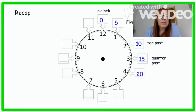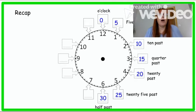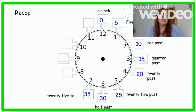When the minute hand is pointing towards the 4, we say 20 minutes have gone by and it's 20 past. When the minute hand is pointing towards the 6, 30 minutes have gone by and we say it's half past. When the minute hand is pointing towards the 7, 35 minutes have gone by and we say it's 25 minutes to, because there's 25 minutes to the next hour.